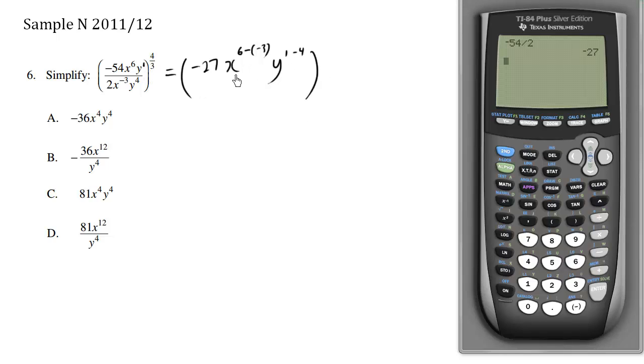All of this to the exponent 4 thirds. Now let's just rewrite this. This is negative 27, x to the 6 plus 3 is 9, this is y to the negative 3, all of this to the 4 thirds.